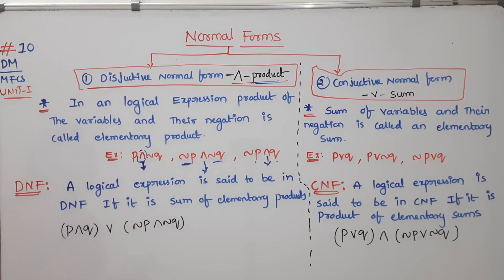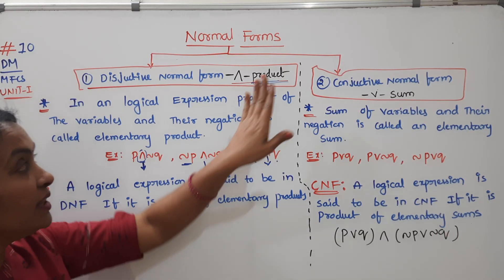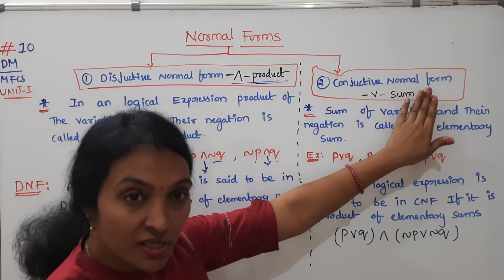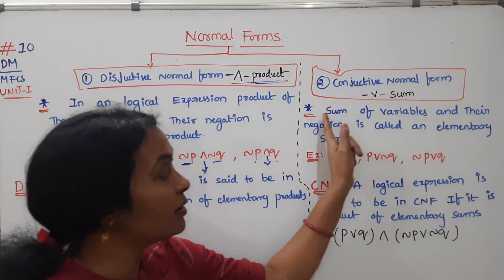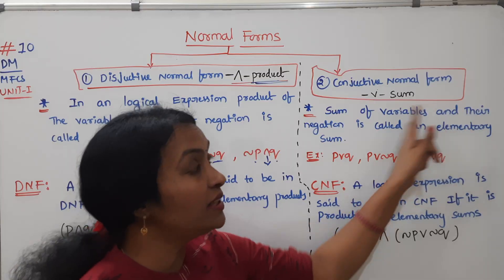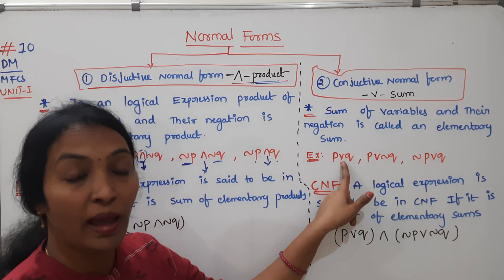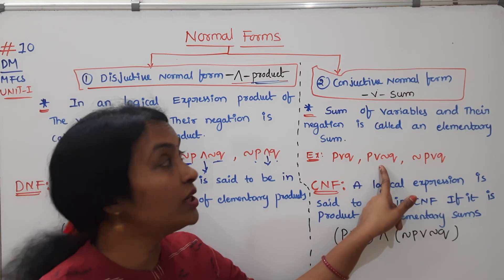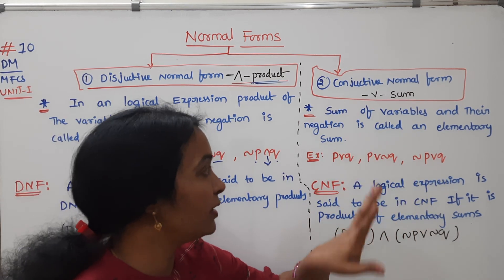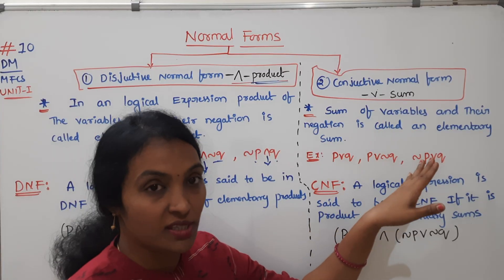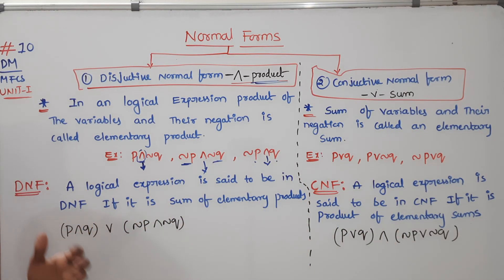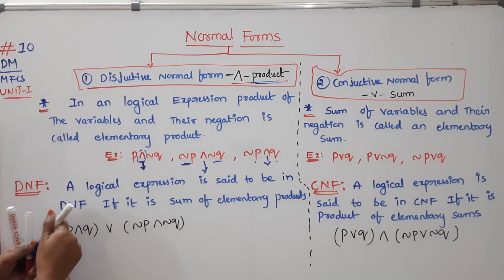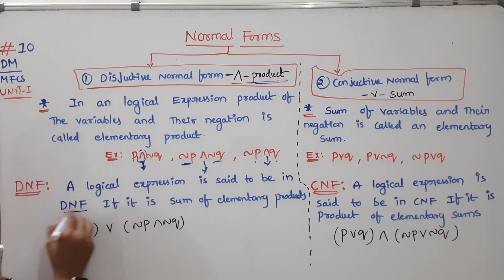This is the sum of elementary products. A sum of elementary products forms a DNF expression. Similarly, a sum of variables or their negations — if it is a conjunctive combination — it is a Conjunctive Normal Form. The logical expression is said to be DNF when it is expressed as a sum of elementary products.